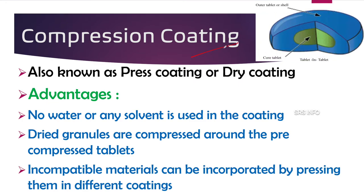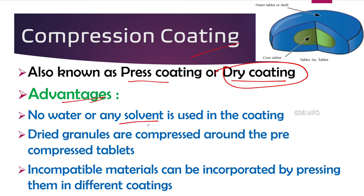The next topic is compression coating, also known as press coating or dry coating. The name itself gives the idea — this is dry coating; no water or any solvent is used. This is the most important advantage of compression coating. The process is done under dry conditions and under pressure, with all other basic steps remaining the same.